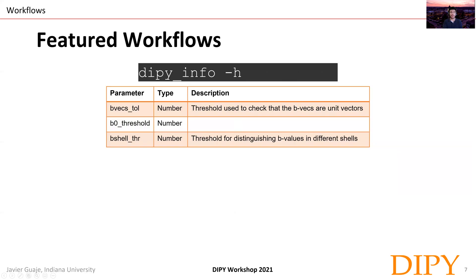Now let's talk about the DiPi info workflow, which is a very useful workflow that allows us to see specific and important information available in bvec files, b-values files, and also NIfTI files. Some of the parameters included are a bvec tolerance, which is a threshold to check if the bvecs are unit vectors, a b-zero threshold to identify b-zeros in our b-values file, and a b-shell threshold to distinguish b-values in different shells.